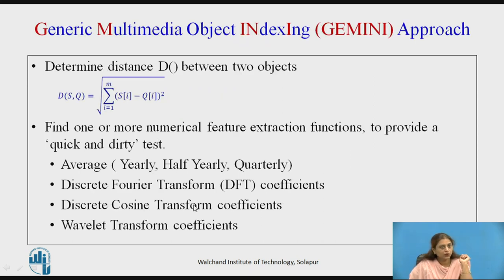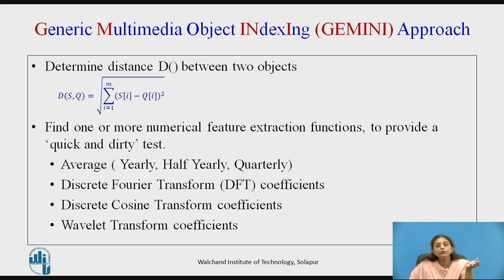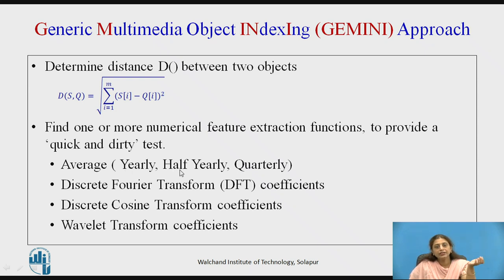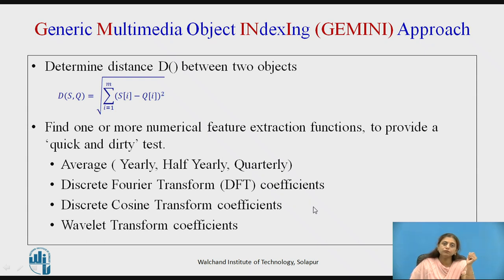Applying the Gemini approach: the first step is to decide the distance function, which is Euclidean distance for this example. The second step is to find numerical features using an extraction function for the quick and dirty test. Possible features include: average yearly (1 feature), average half-yearly (2 features), quarterly averages (4 features), or coefficients from the Discrete Fourier Transform, Discrete Cosine Transform, or Wavelet Transform — where the number of coefficients is less than the actual data.